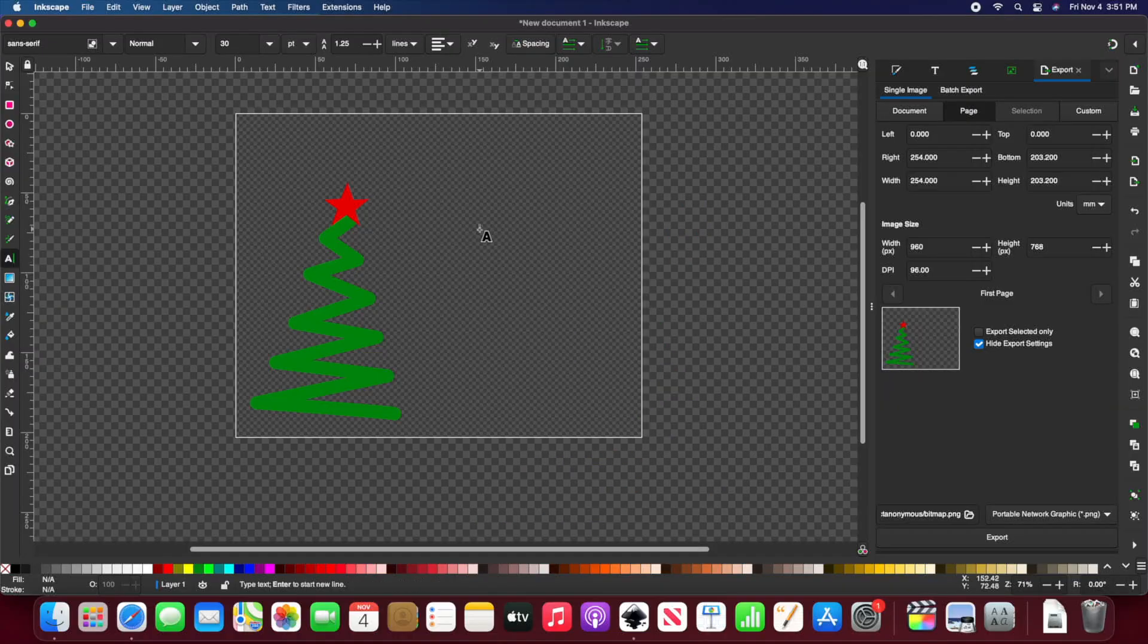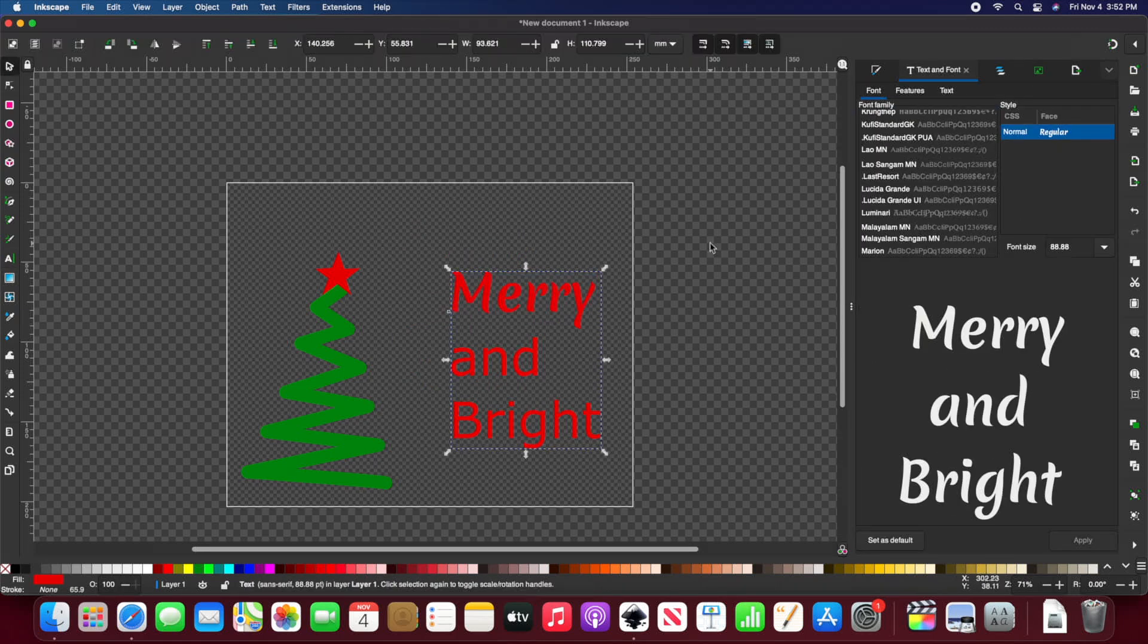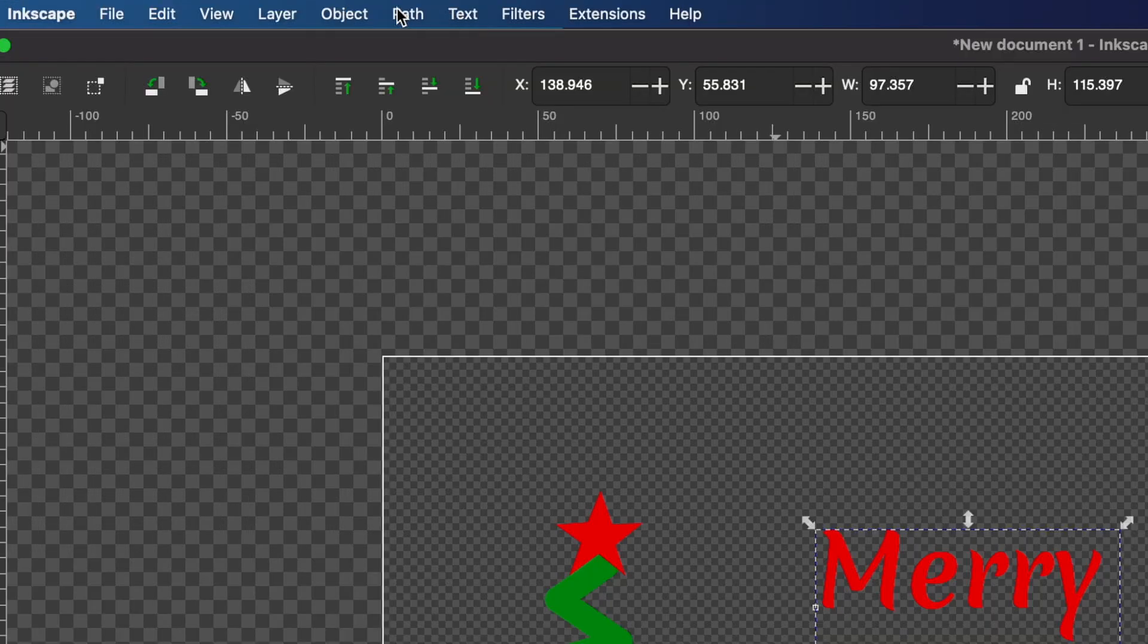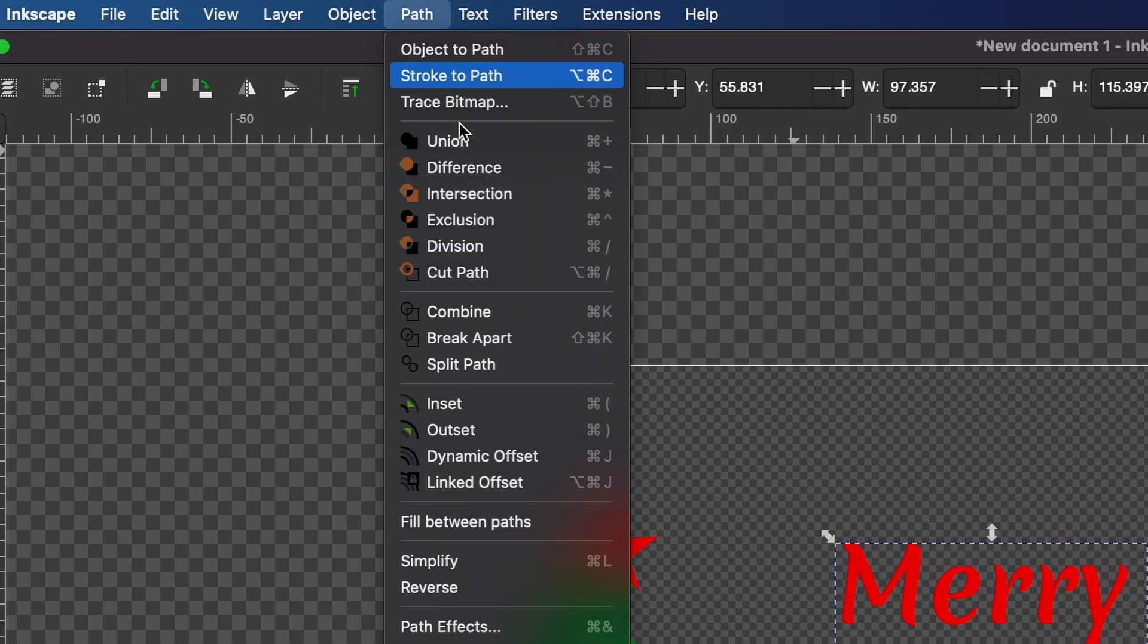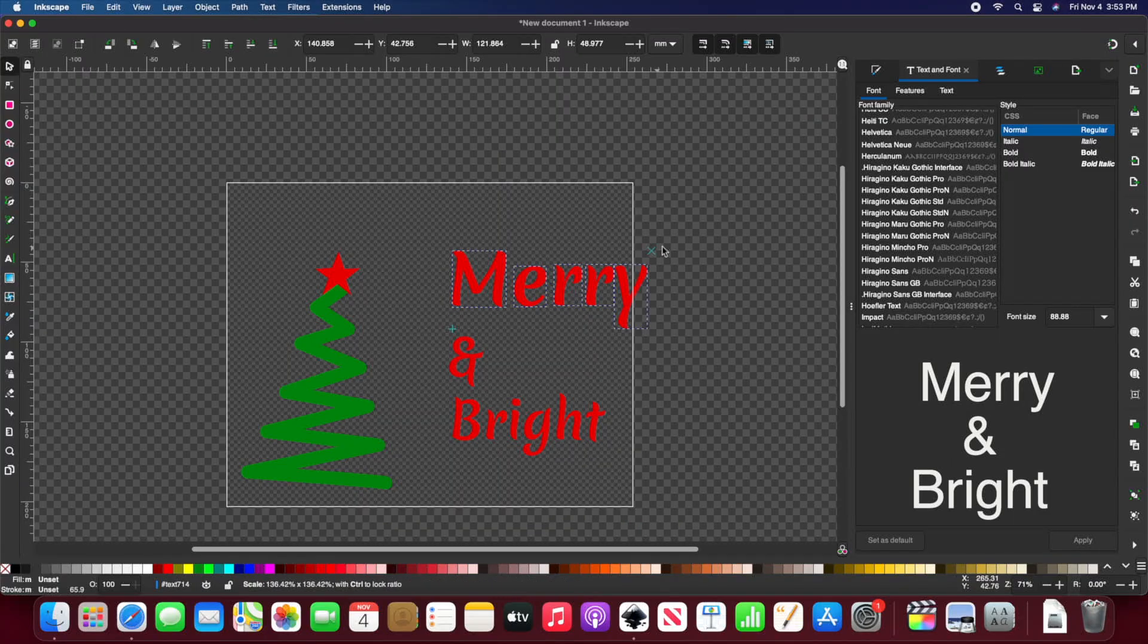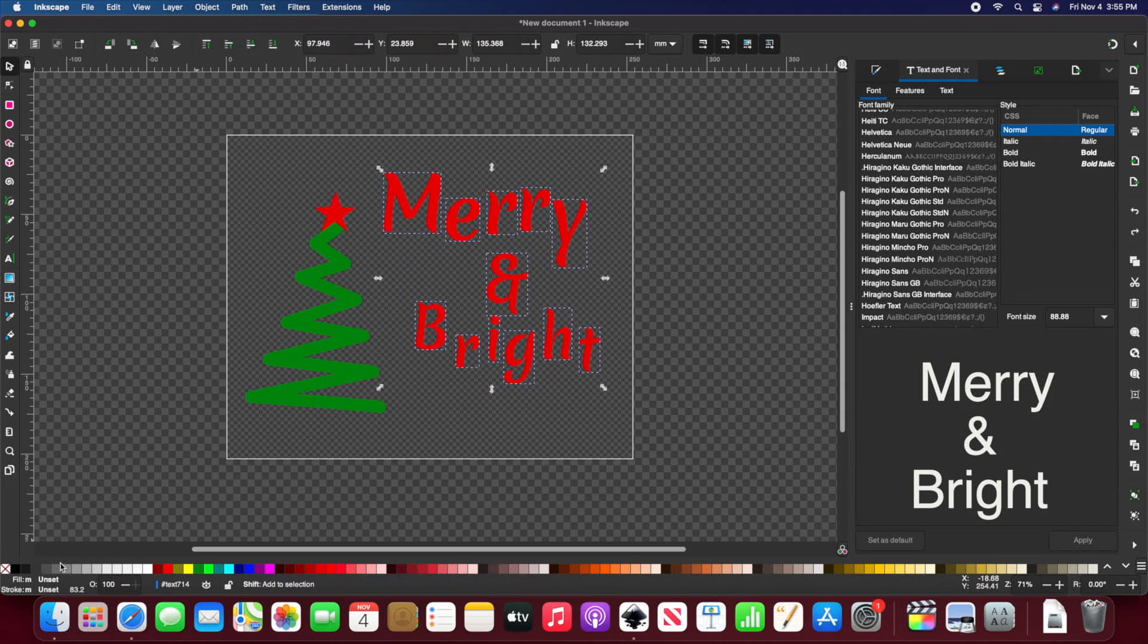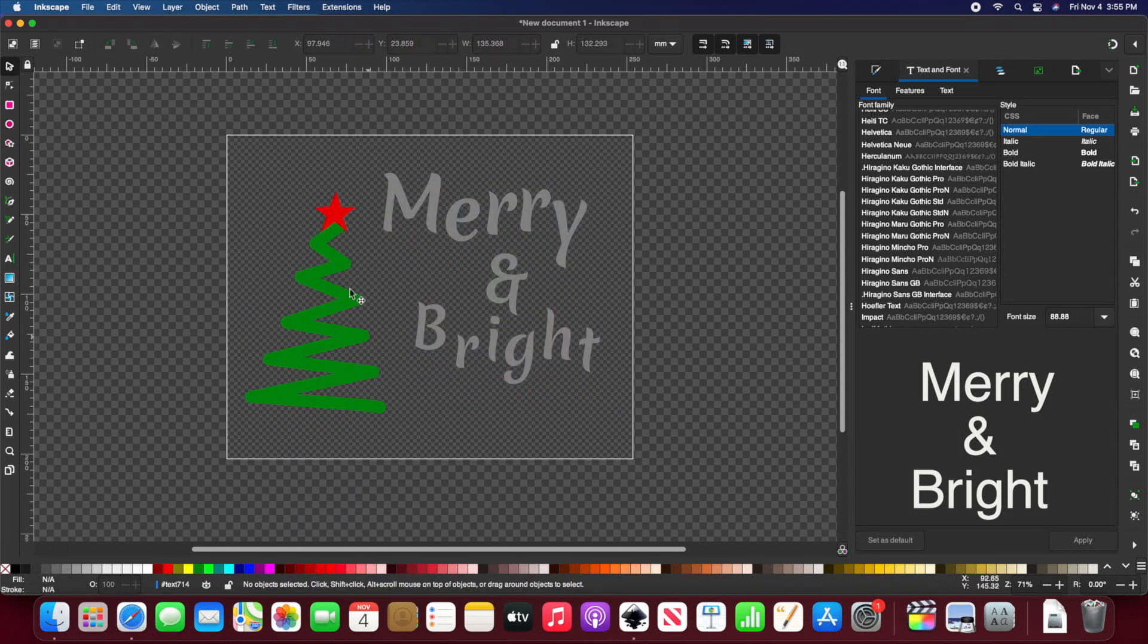I'm going to shrink the star and I'll hold control while doing so so it doesn't distort. I'm going to click the text and font tool on the side and I'll write text saying Merry and Bright. I'm going to choose a font. Now I'll turn my text to a path. I will also break it apart so I can move around the individual letters.